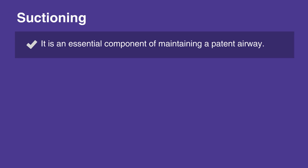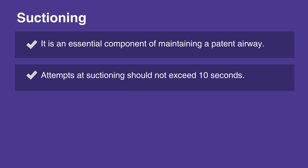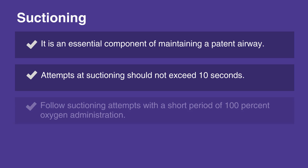Suctioning is an essential component of maintaining a patent airway. Providers should suction the airway immediately if there are copious secretions, blood, or vomit. Attempts at suctioning should not exceed 10 seconds. To avoid hypoxemia, follow suctioning attempts with a short period of 100% oxygen administration.